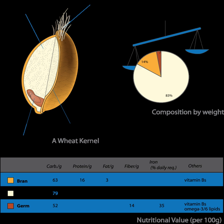Bran, also known as miller's bran, is the hard outer layers of cereal grain. It consists of the combined aleurone and pericarp. Along with germ, it is an integral part of whole grains, and is often produced as a byproduct of milling in the production of refined grains.